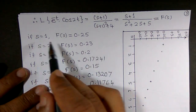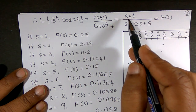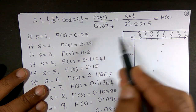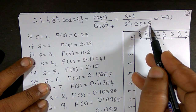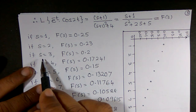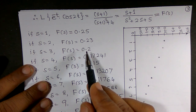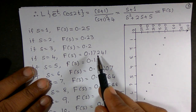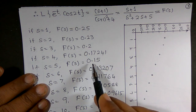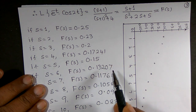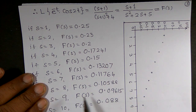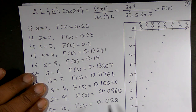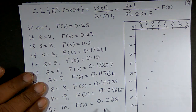Now replacing s by 1: (1+1)/(1+2+5) = 2/8 = 0.25. Replace s by 2: 3/(4+4+5) = 3/13 ≈ 0.23. s = 3 gives 0.2, s = 4 gives 0.17241, s = 5 gives 0.15, s = 6 gives 0.13207, s = 7 gives 0.11764, s = 8 gives 0.10588, s = 9 gives 0.09615, and s = 10 gives 0.088.